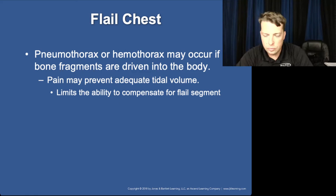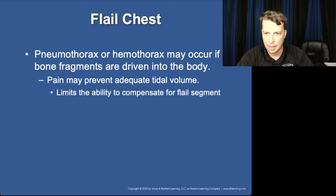Hemothorax can rupture the lung, leading to combined hemo- and pneumothorax. Flail segments can also puncture the lung, causing pneumothorax or hemothorax.